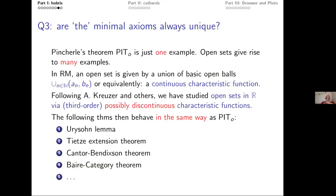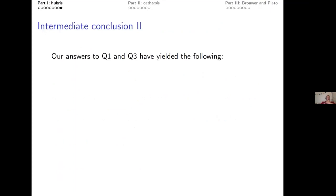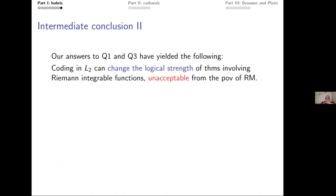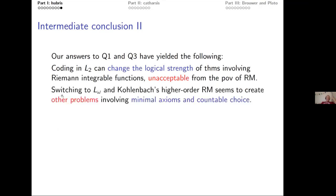Intermediate conclusion two: coding, when you go to Riemann-integrable functions, can change the logical strength of theorems — as we've seen for Arzela's convergence theorem — and change it quite dramatically. This is unacceptable from the point of view of reverse math. So: no more coding; let's all go to Kohlenbach's higher-order reverse math. However, there we encounter other problems with countable choice as mentioned.